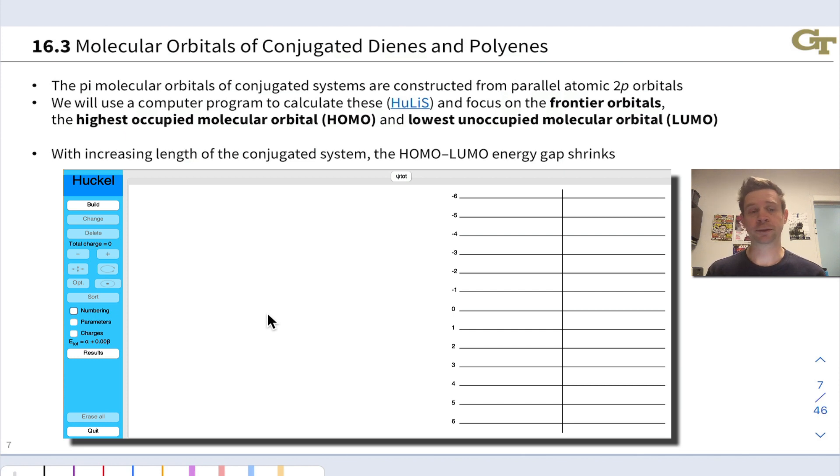Let's start with the simplest pi bond-containing molecule, which is ethylene, C2H4. If we look at ethylene, it's got a pi bonding molecular orbital and a pi antibonding or pi star molecular orbital. These shapes should be pretty familiar from your prior experience.